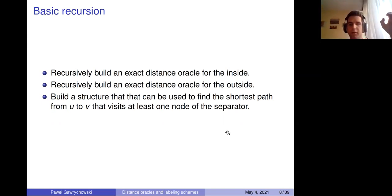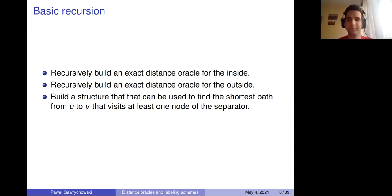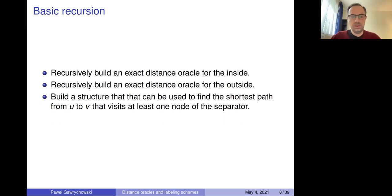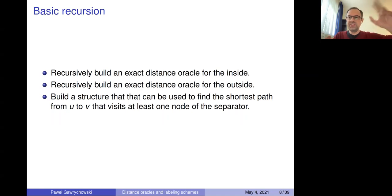Question from the audience: is the metric space induced by the inside the same as the metric space of the whole graph? Answer: no, distances are different. The structure for the inside only captures shortest paths that stay inside. All other shortest paths will go through one of the nodes of the separator, and I need to add separate information to find those. So we need to add information to find the shortest path from u to v assuming it intersects the separator.